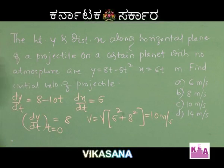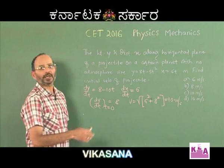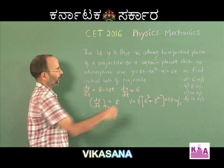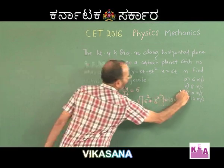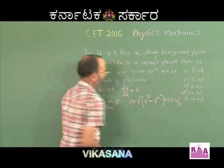The square root of 100 gives 10 meters per second. Among the options given, option C is the correct answer: 10 meters per second.